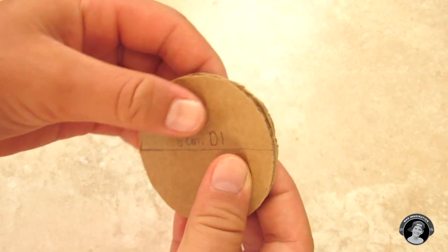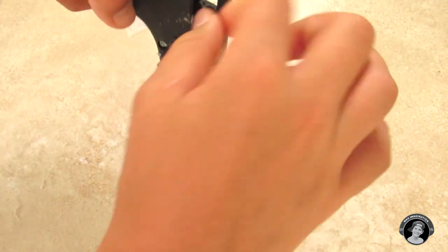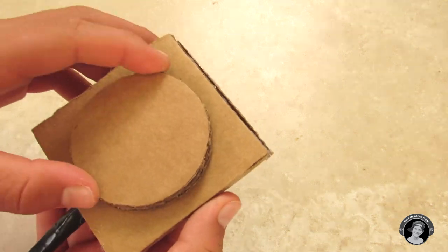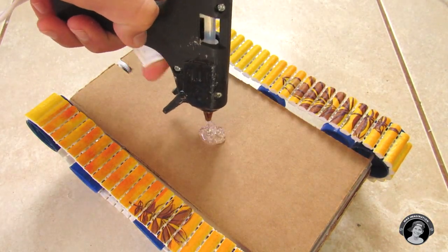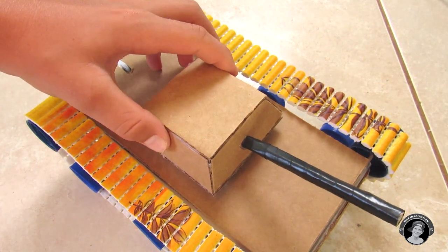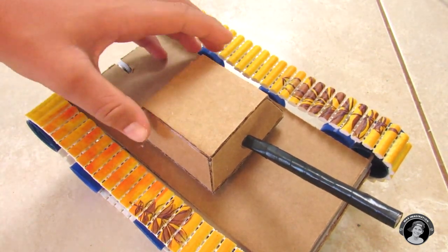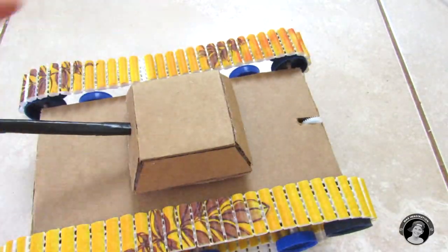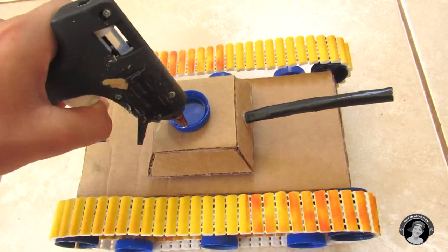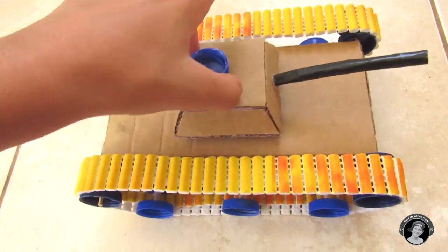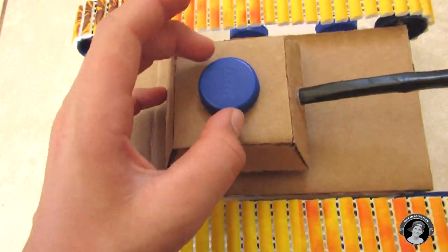Then glue these two circles to the bottom of what we call our turret. Drop a huge drop of hot glue in the middle of our tank and then glue our turret on and make sure it is dry. Then we are going to take our last bottle cap and glue it to the very top of our turret just for the looks. Now we are done with our tank. Let's go test it out.